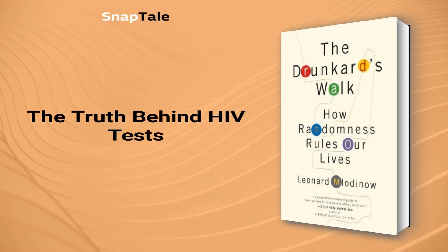The Truth Behind HIV Tests: the book discusses the probability of an HIV test coming back positive if the person is actually negative. The author, Leonard Mlodinow, had an HIV test come back positive once. Upon asking his doctor, he found out that the probability of a person being HIV negative if the test comes back positive is over 90%, and only 1 out of 11 tests correctly identifies a person with HIV. This concept is called conditional probability — it examines the likelihood that an event will occur given that another event has already occurred. In short, a positive HIV test does not necessarily mean that the person is HIV positive. The same principle applies to other situations, like having a headache and Ebola. Therefore, it is important to analyze the conditions behind the statistic to get a clearer understanding.